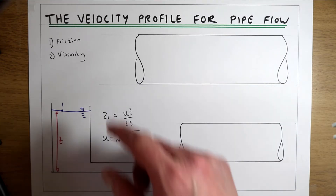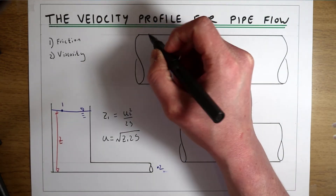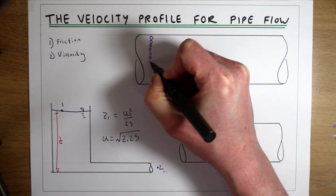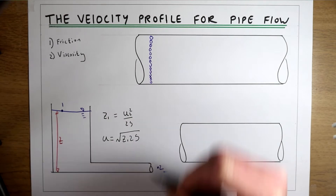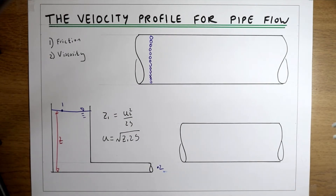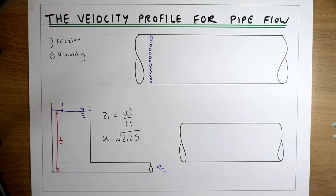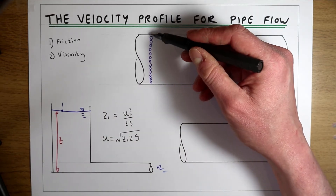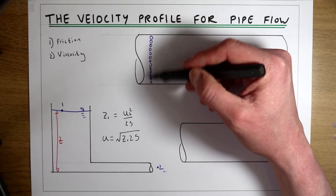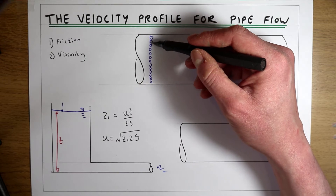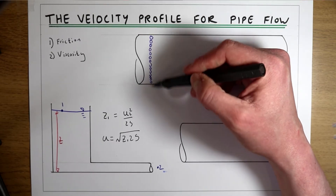So if water starts to flow down this pipe, what we can imagine is a series of water molecules across the pipe. If there's no friction or viscosity inside the pipe then all of these water molecules are just going to move down the pipe in a uniform distribution with no losses. So the velocity of each one of these particles is going to be the same across the pipe — a uniform velocity distribution — and every particle in the pipe would have the mean velocity.